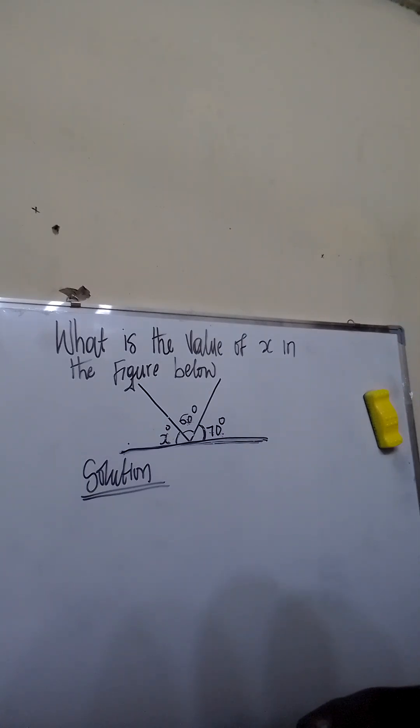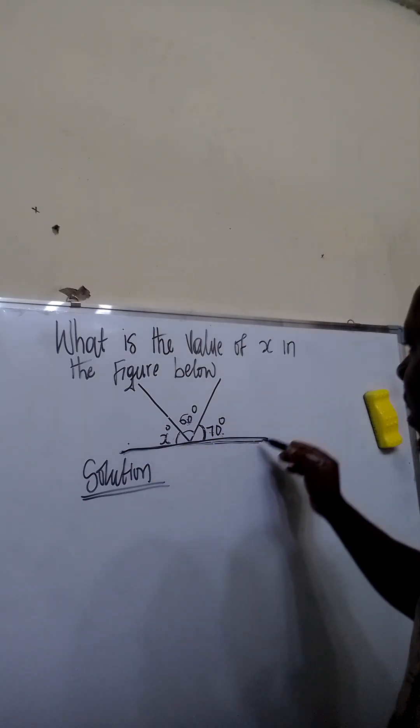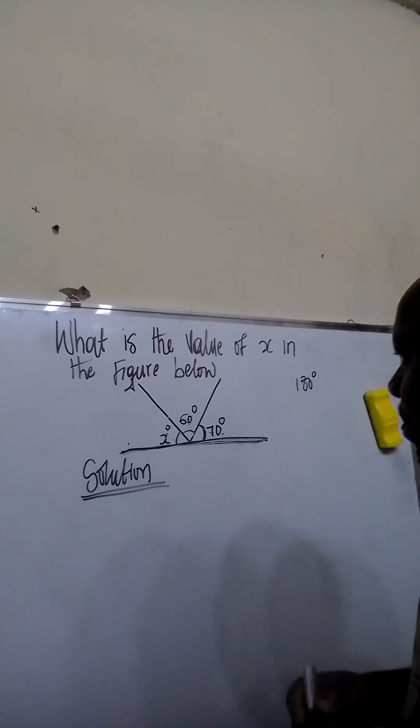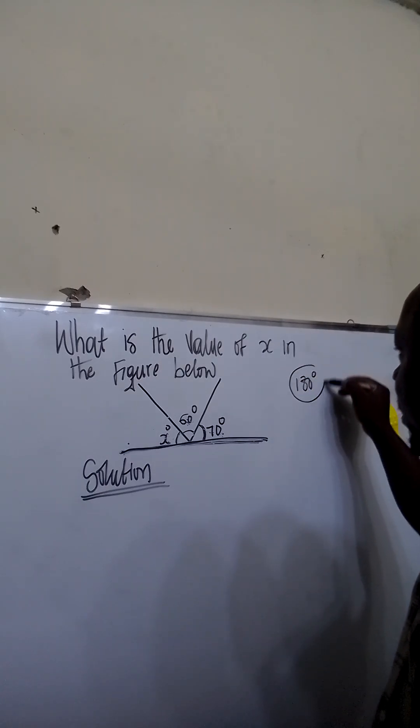One of the properties of angles is the sum of angles on a straight line is always equal to 180 degrees.